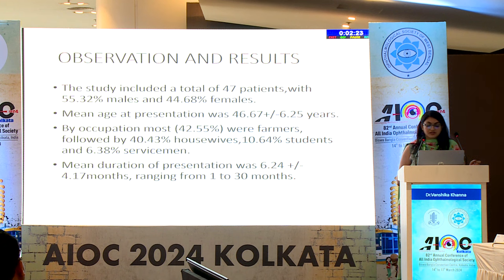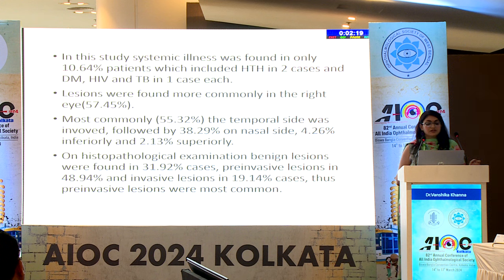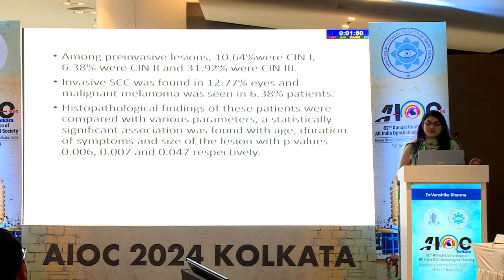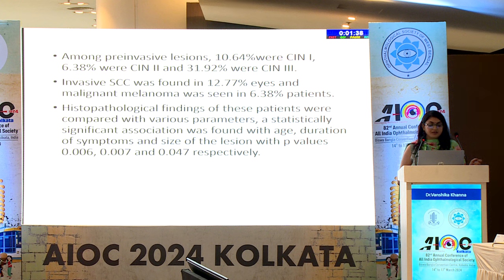The study included 47 patients: 55% male. Mean age at presentation was around 46 years. Most were farmers, followed by housewives, students and servicemen. Mean duration of presentation was around 6 months (range 1-30 months). Systemic illness was found in only 10%. Lesions were more common in the right eye; the temporal side was most commonly involved, followed by nasal, inferior and superior. On histopathological examination: benign lesions in 31%, pre-invasive in 48% and invasive in 19%. Among pre-invasive lesions, 10% was CIN1, 6% CIN2 and the rest CIN3. Invasive SCC was found in 12% and malignant melanoma in 6%.